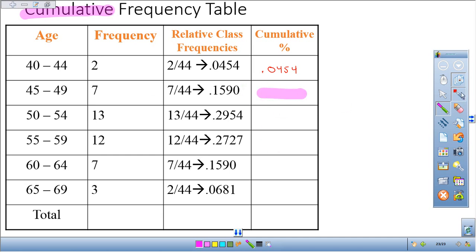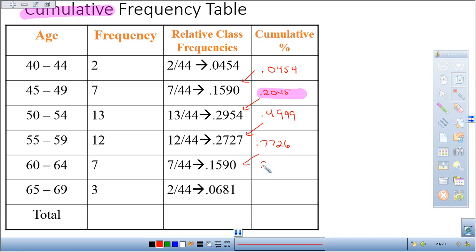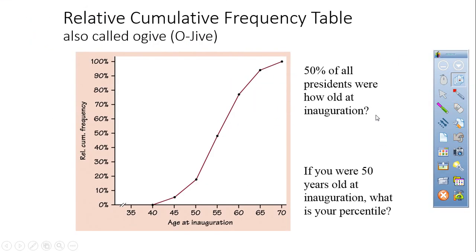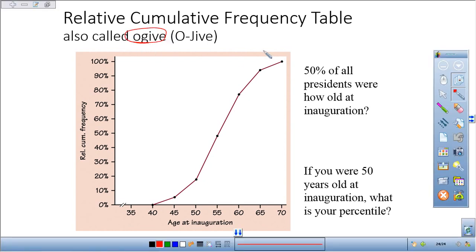But this is a cumulative frequency. So for this next value here, it's not 0.1590. It's this plus that value. If I add them together, I get 0.2045. And then if I add that one there, I get 0.4999. And if I keep doing this process, 0.7726, 0.9316, and just so you can see, you won't get exactly one, but you should get one. That's what it should be. And that's what a cumulative frequency table looks like. It's also called an ogive sometimes. It looks like ogive, but it's pronounced ogive. And this would be the ogive for the presidents.